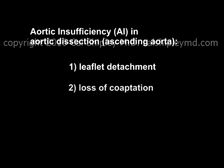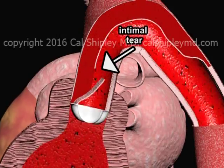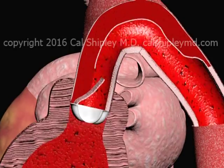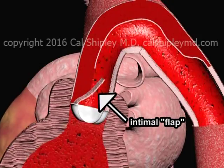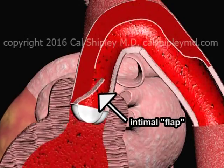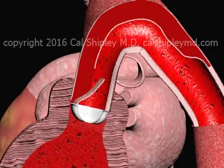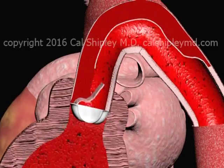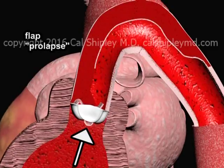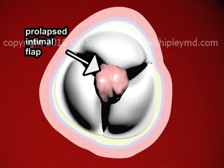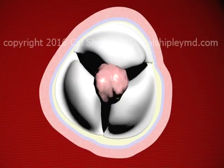The third mechanism by which aortic insufficiency may occur in aortic dissection is with prolapse of the intimal flap. The vast majority of aortic dissections begin with a tear in the intimal layer of the inner aortic wall. Depending on the extent of the tear, an intimal flap may form. If the intimal flap is located in the area of the aortic root near the aortic valve, the changing pressures generated during the contraction and expansion of the left ventricle may cause the intimal flap to become trapped between the leaflets of the valve. This process is known as prolapse of the intimal flap, and leads to loss of leaflet coaptation and aortic insufficiency with regurgitation.